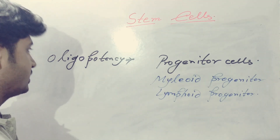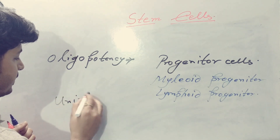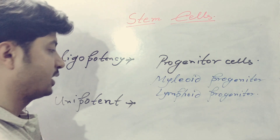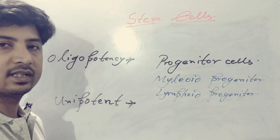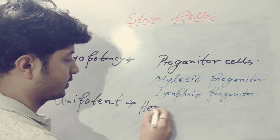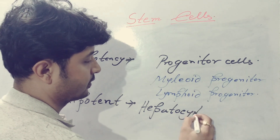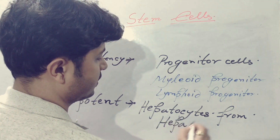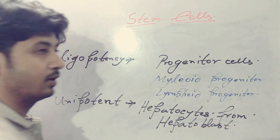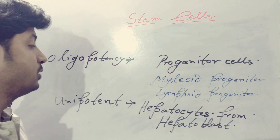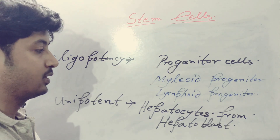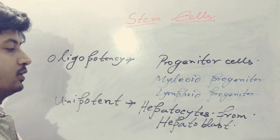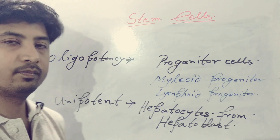The last one is unipotent cells. It is a very controversial cell type — it has not yet been fully proved that unipotent cells exist, but hepatocytes derived from hepatoblasts are thought to behave as a kind of unipotent stem cells. So they are also stem cells but maintain their stemness as hepatocyte cells which come from hepatoblasts.